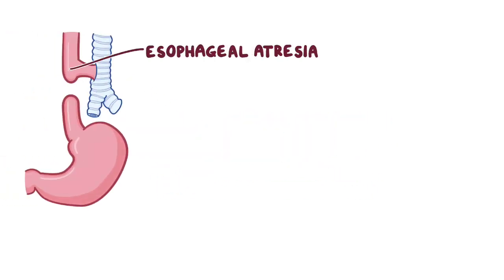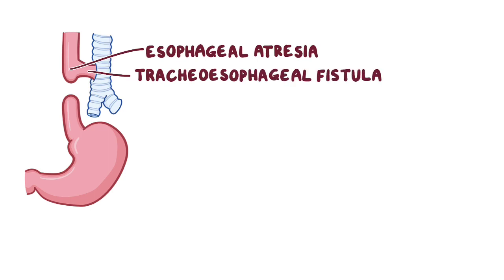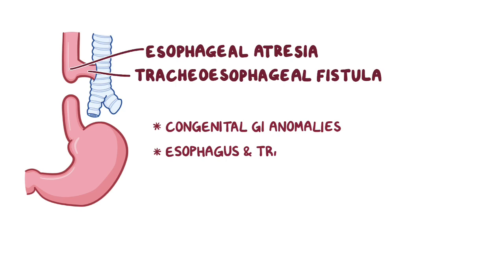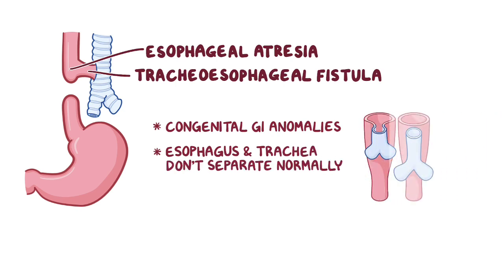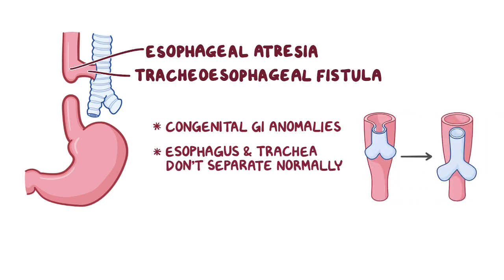Esophageal atresia and tracheoesophageal fistula are congenital gastrointestinal anomalies where the esophagus and trachea don't separate normally during development. Because these two organs develop together and eventually separate, the two conditions often occur together.